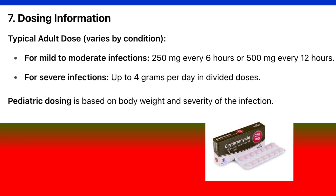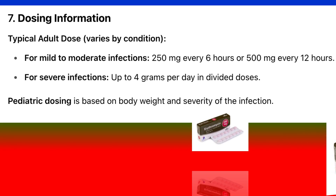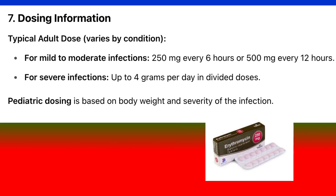Dosing information: Typical adult dose varies by condition. For mild to moderate infections: 250 mg every 6 hours or 500 mg every 12 hours. For severe infections: up to 4 grams per day in divided doses. Pediatric dosing is based on body weight and severity of infection.